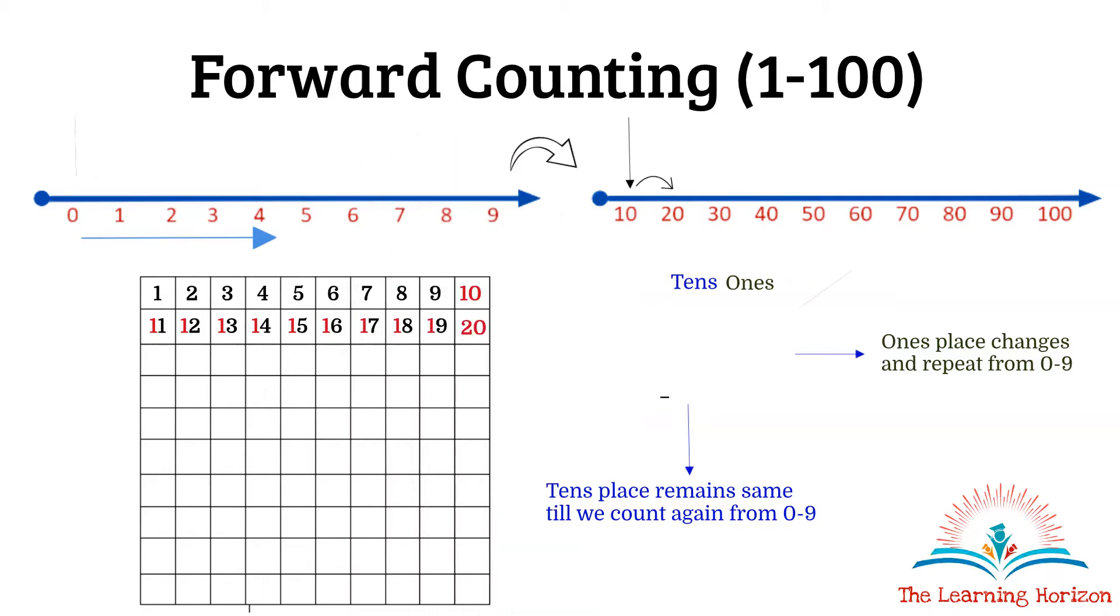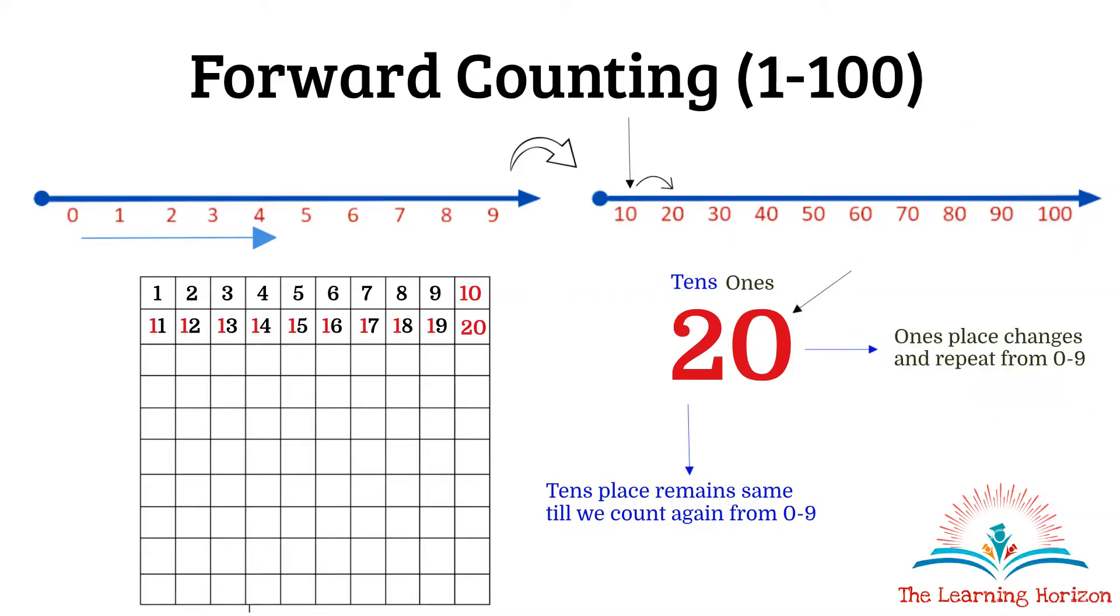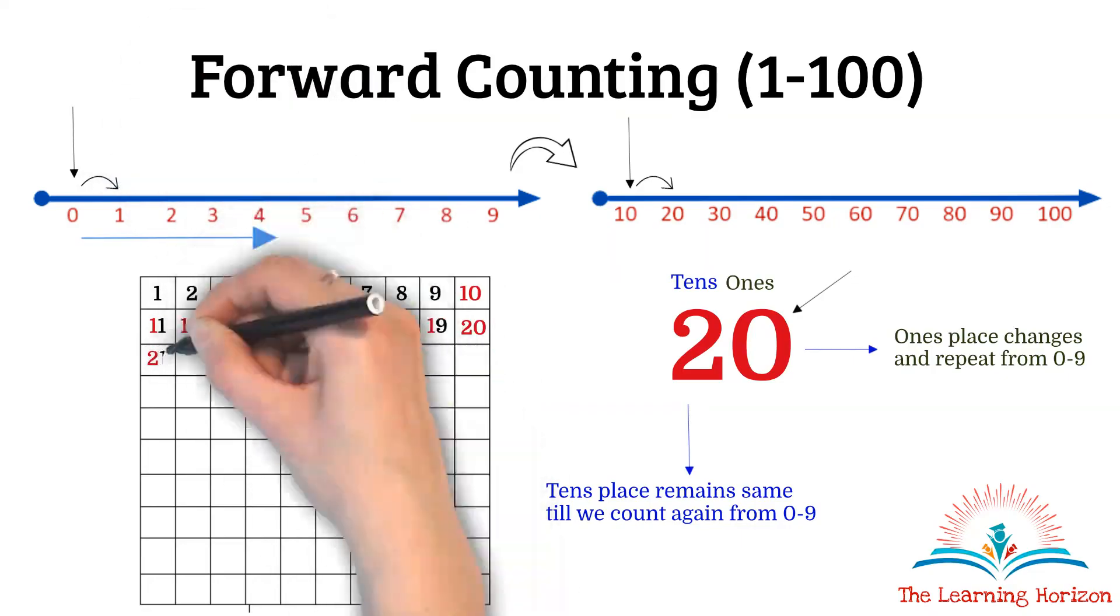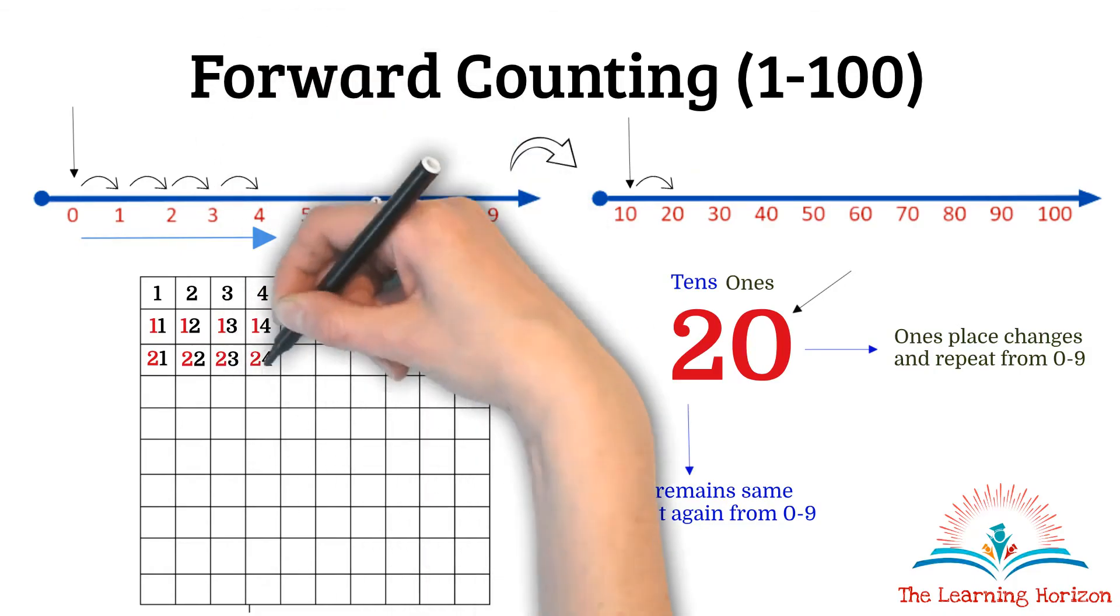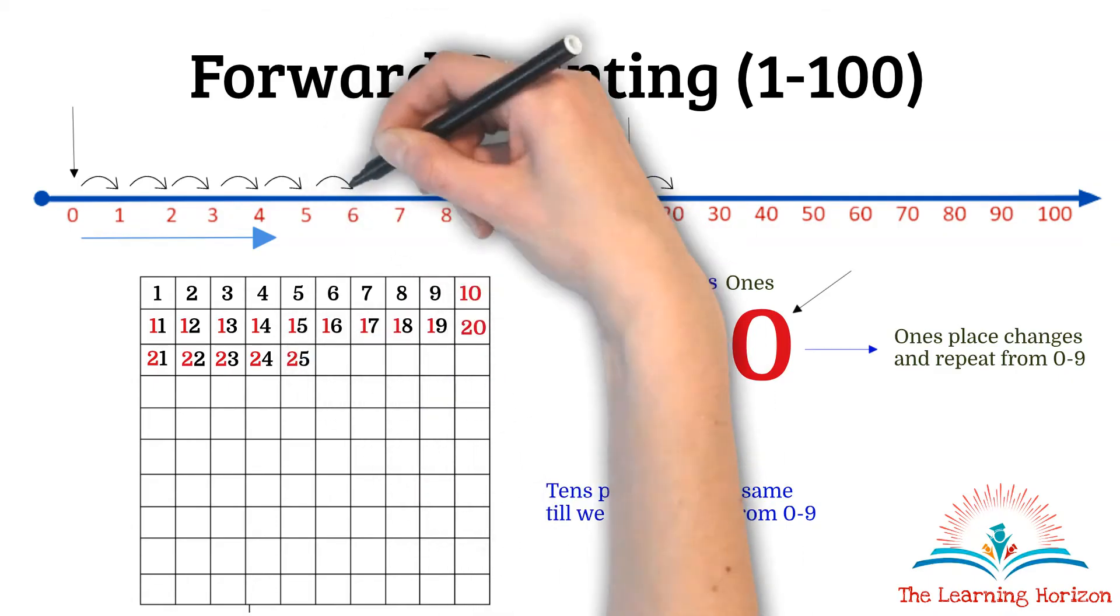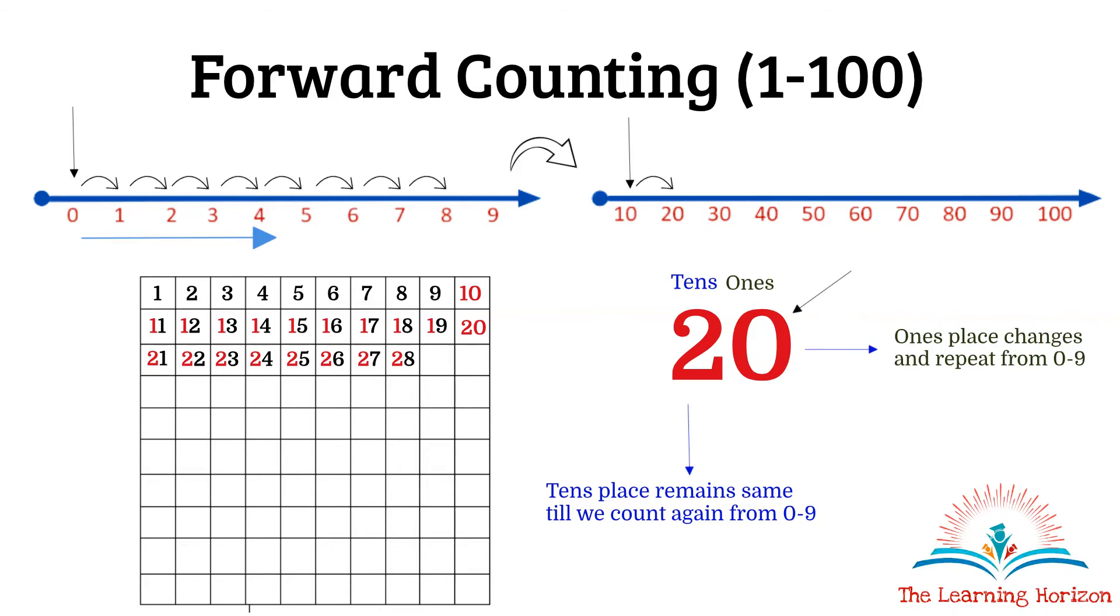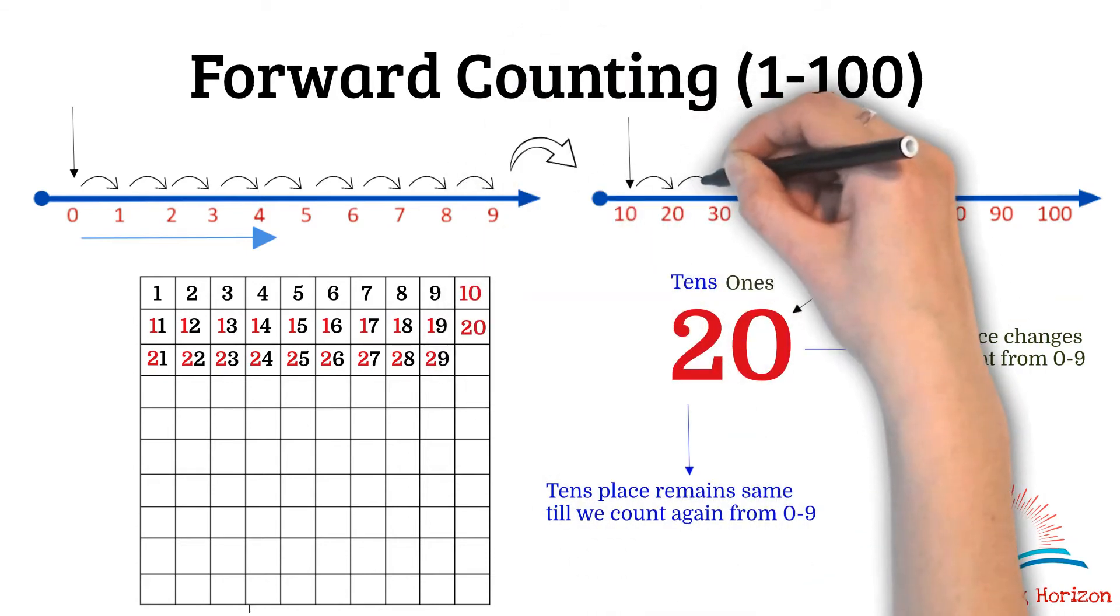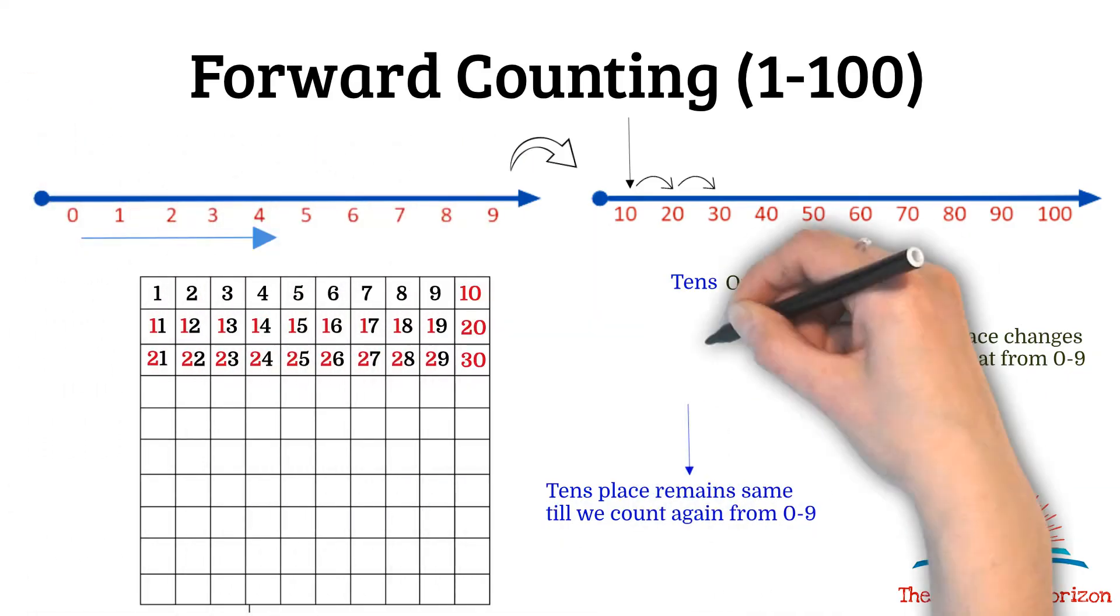Now what do we have at ones place? It's again 0. So let's count from 0 to 9 with the same tens place: 21, 22, 23, 24, 25, 26, 27, 28, 29. No more digits. Move on to the next tens that is 30. Repeat the same order from 0 to 9.